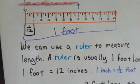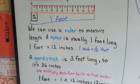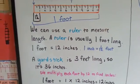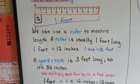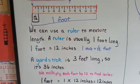It's one foot long, it's 12 inches. We can use a ruler to measure length. A ruler is usually one foot long, and one foot is 12 inches, so one inch is one twelfth of a foot.